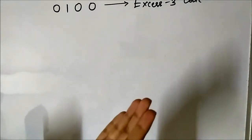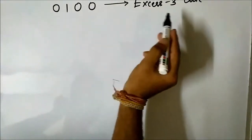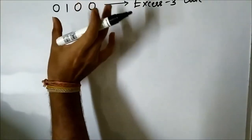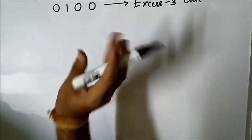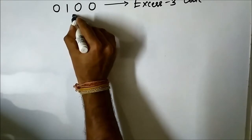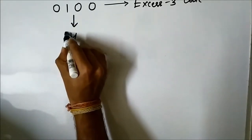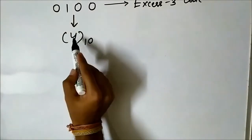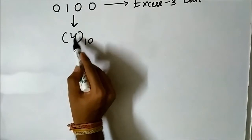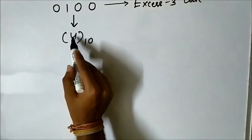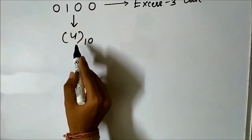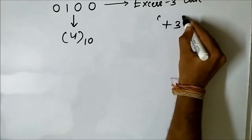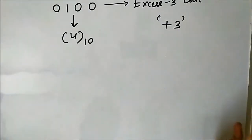The first step in XS3-to-decimal conversion is to take the given XS3 code and convert it into its equivalent decimal form. For example, the code 0100 — we need to find the decimal equivalent of this binary code. We can see clearly that this binary code is the binary version of the decimal symbol 4, so the decimal equivalent of 0100 is 4.